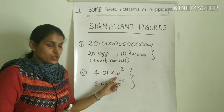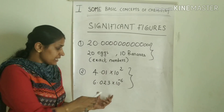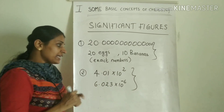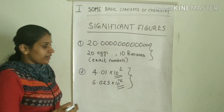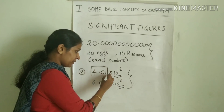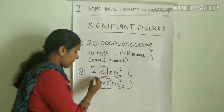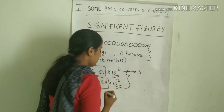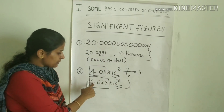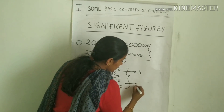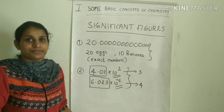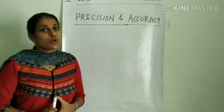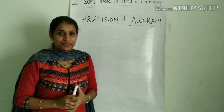Another example: 4.01 × 10², and 6.023 × 10⁻⁶. In scientific notation, we only consider the coefficient part — not the power of 10. So for these numbers, we calculate the number of significant figures from the coefficient.